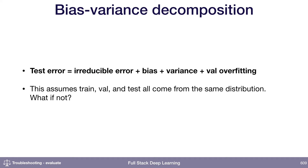To summarize, the bias-variance decomposition tells you that your test error is some measure of irreducible error, plus your bias, plus your variance, plus some validation set over-fitting.